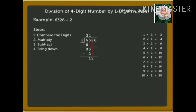We compare 12 and 2. 12 is greater than 2, so we can divide it by 2. Since 6 times 2 equals 12, we write the number 6 above 2 in the quotient and the number 12 under 12. Subtract 12 from 12, which gives us 0, written in the tens column.